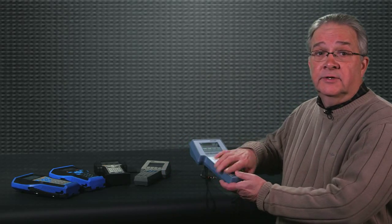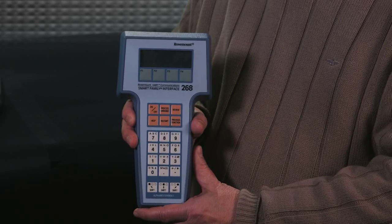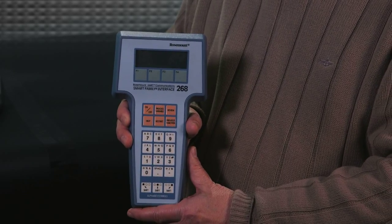In the 1980s the 268 heart communicator was introduced and this was the first intrinsically safe handheld to handle all Rosemount devices.